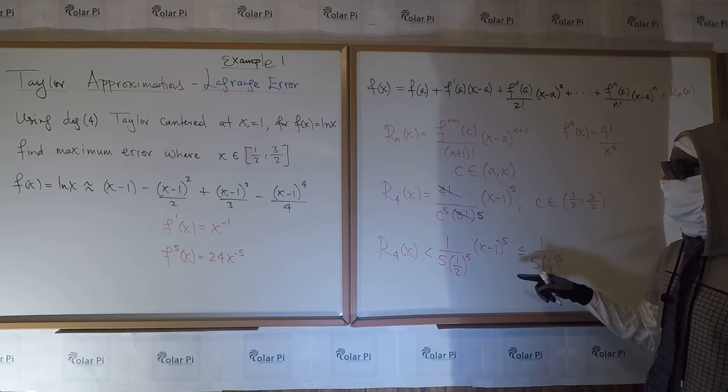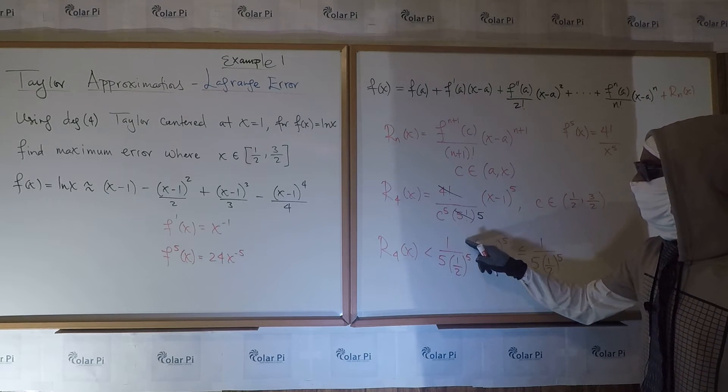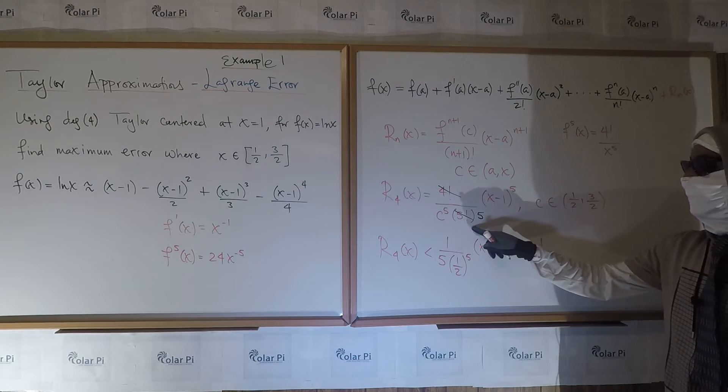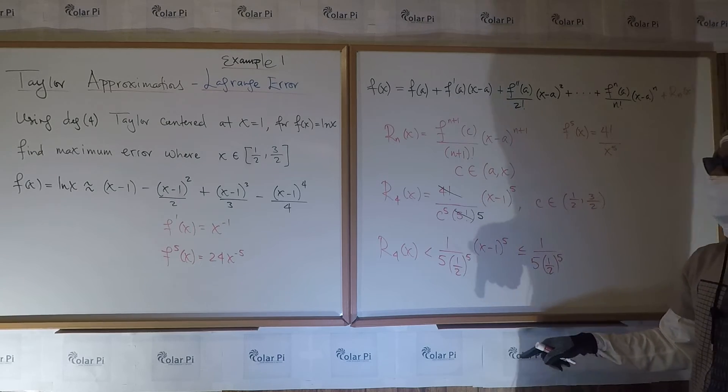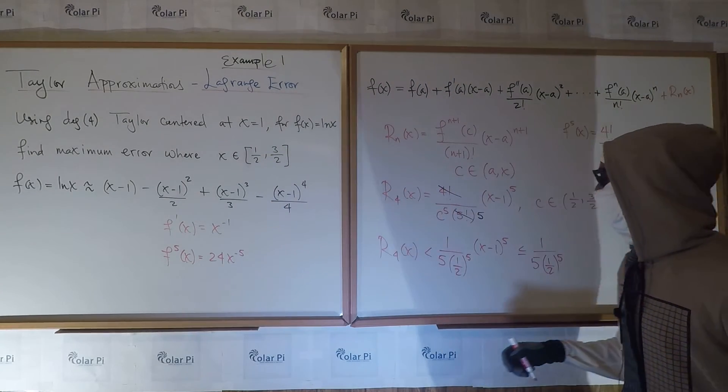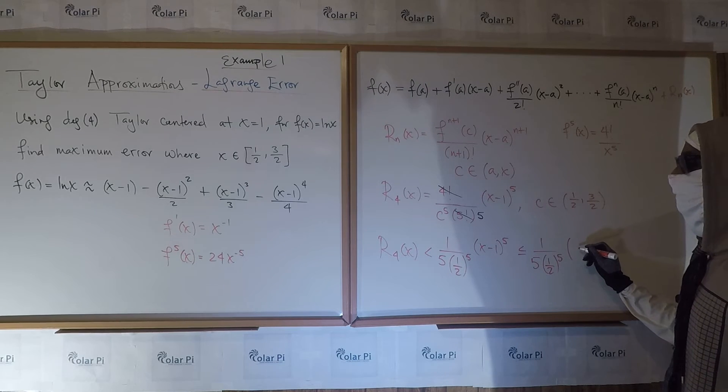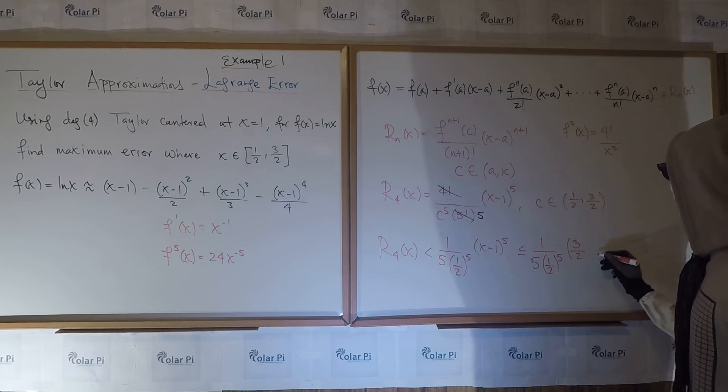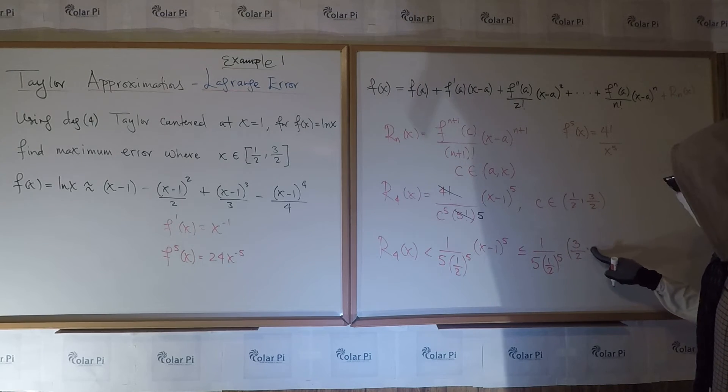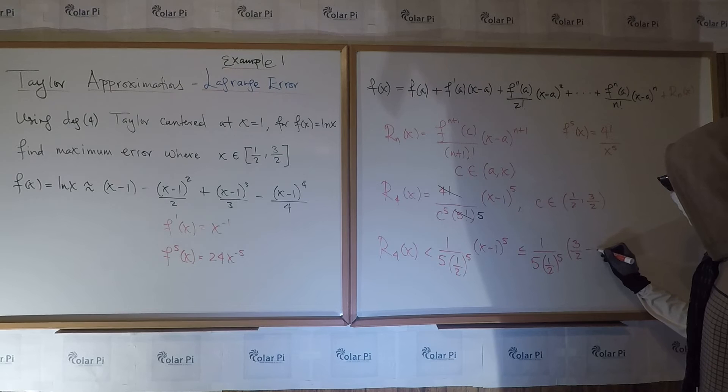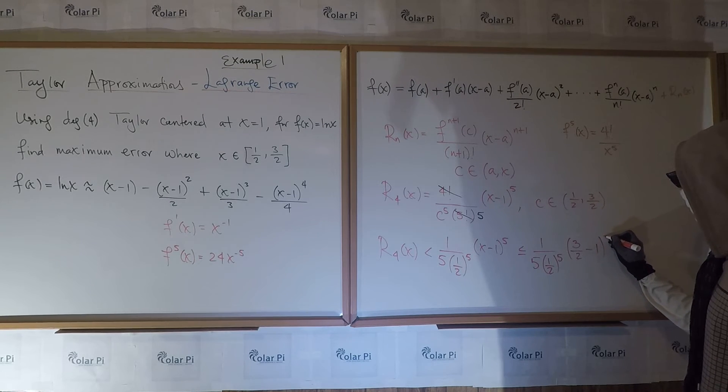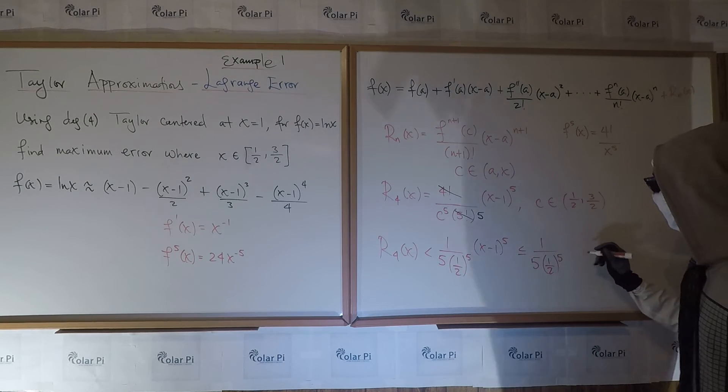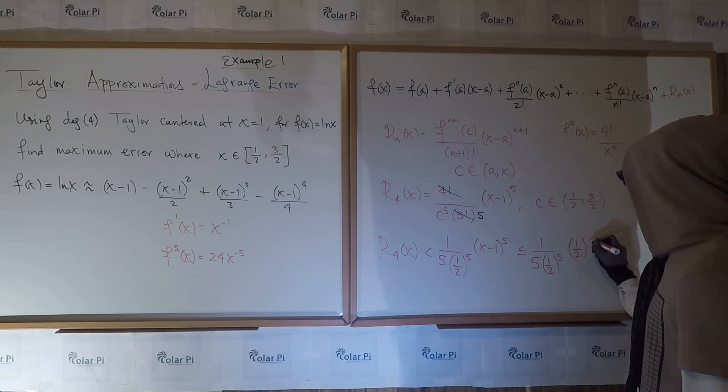So our task again to maximize this whole thing is to maximize this part, which is by picking the smallest c we could pick, and then to maximize this part, which happens if we pick the biggest x we have available to us. And so the biggest x available is three-halves. So I go three-halves. That's x minus one. Three-halves minus one to the fifth. But wait, three-halves minus one is just one-half, so I just have one-half to the fifth here. One-half to the fifth. Got it.